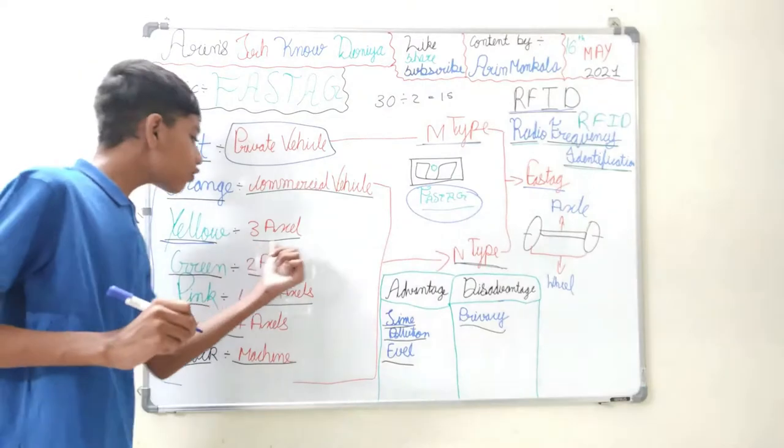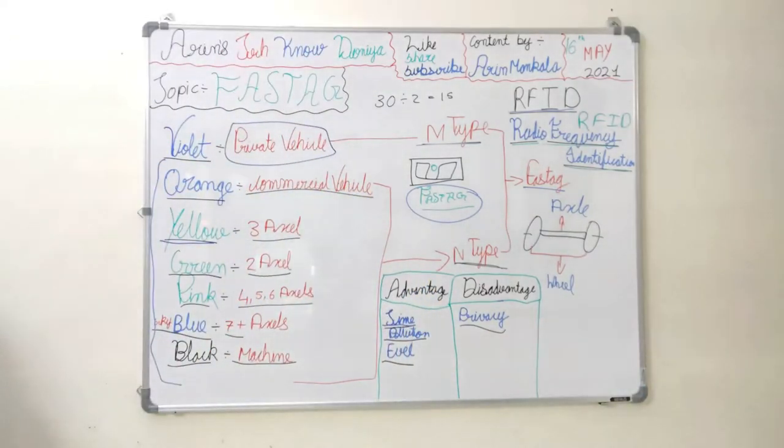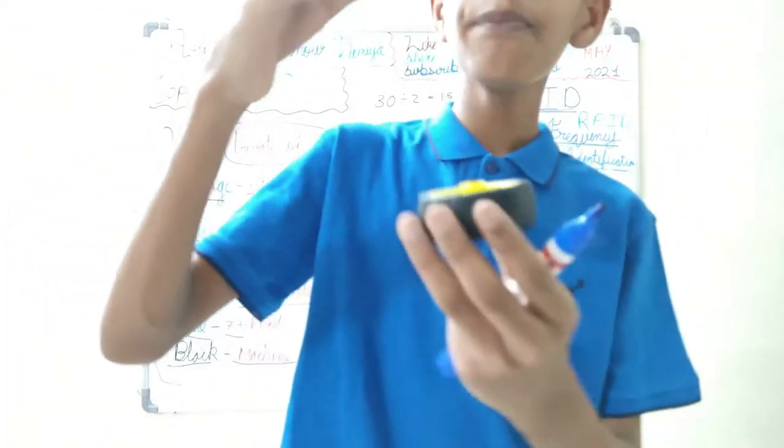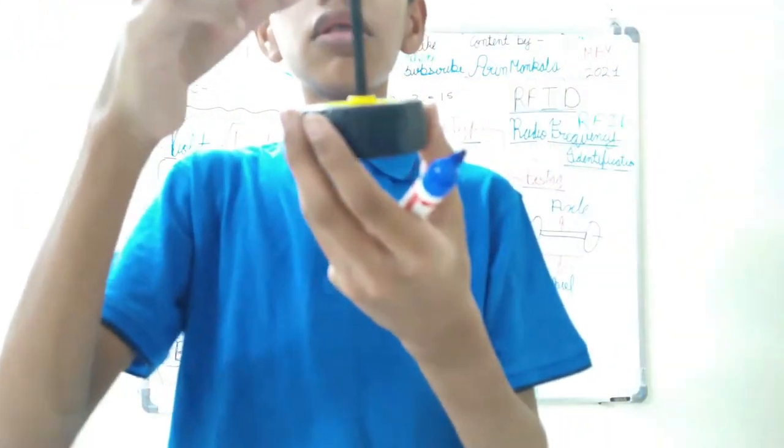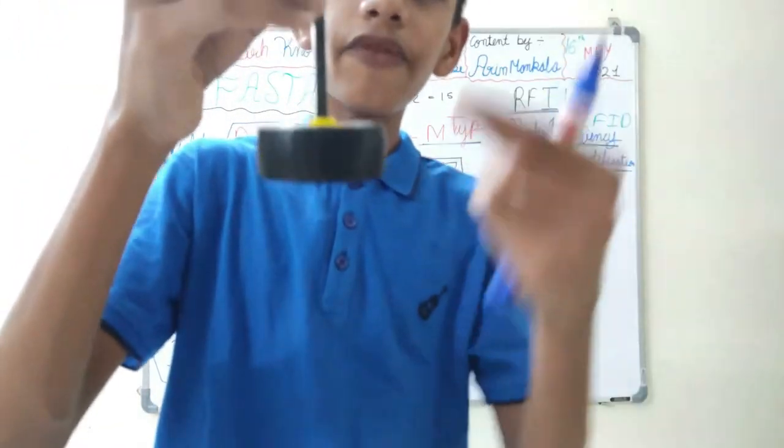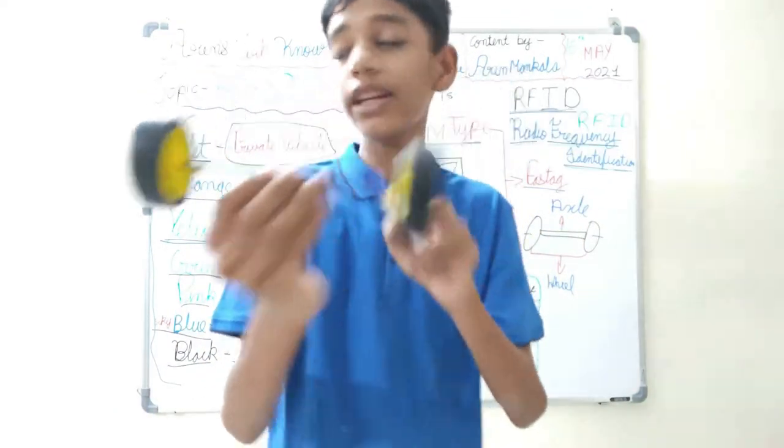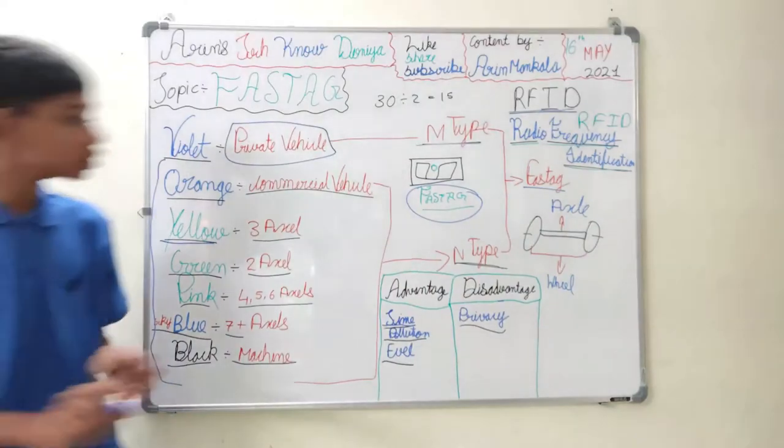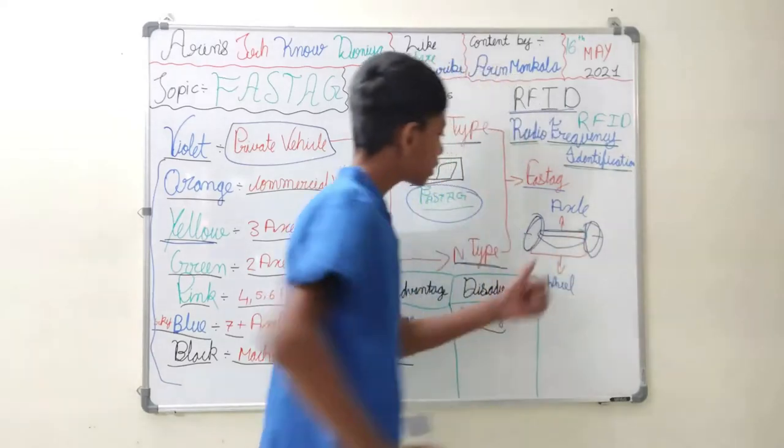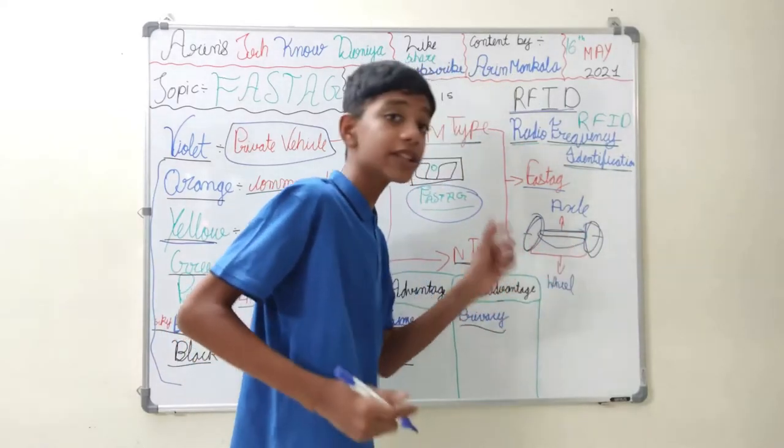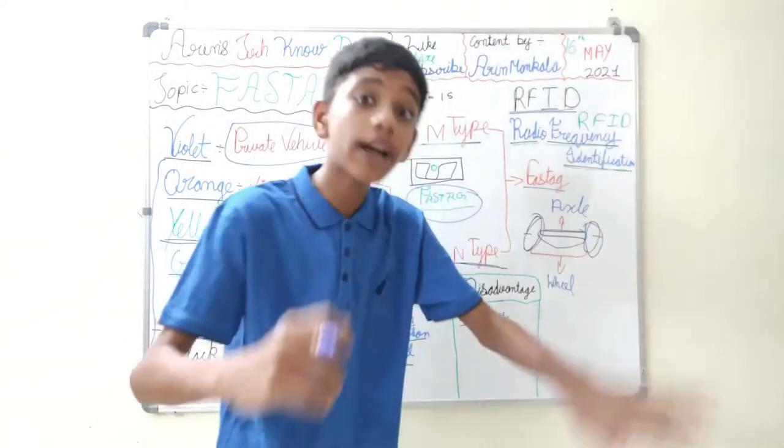Then there is yellow color card. Yellow color cards are for three axle trucks. So now you must be wondering what is axle. As you can see a demonstration here I have made, you can see this rod. Now this rod has joined these two wheels over here. So the rod that joins the wheels is known as an axle. These two are the wheels and this is the axle. So this rod is the axle which joins two wheels.